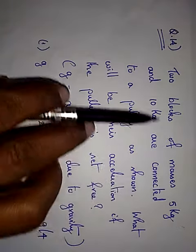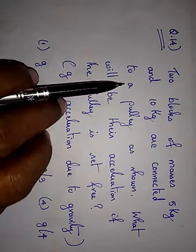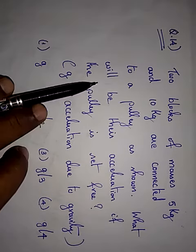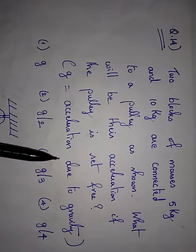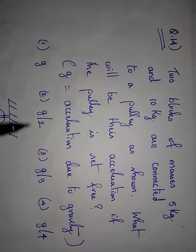Two blocks of masses 5 kilogram and 10 kilogram are connected to a pulley as shown. What will be their acceleration if the pulley is set free? G is acceleration due to gravity and we have four options.